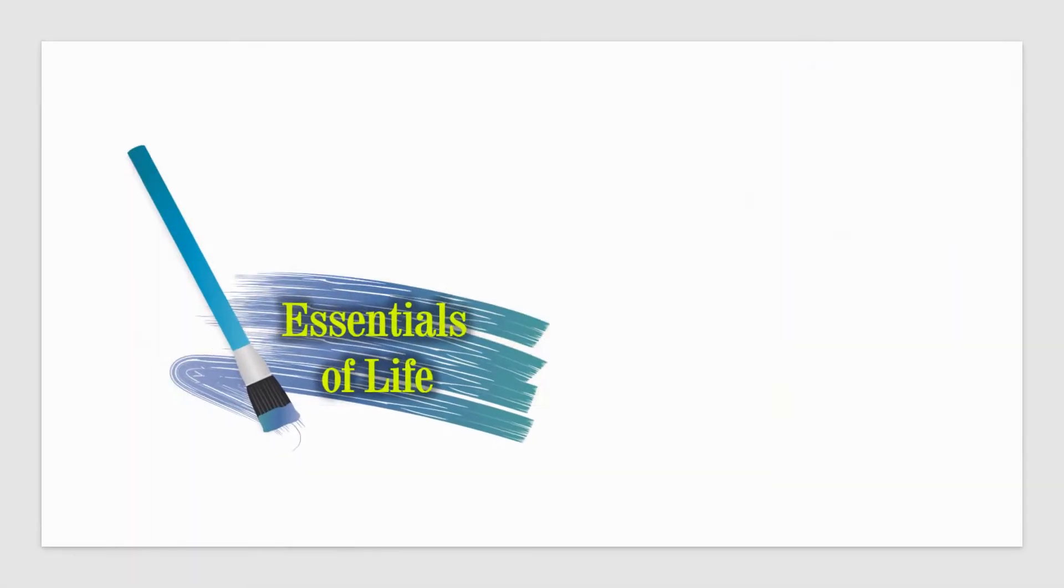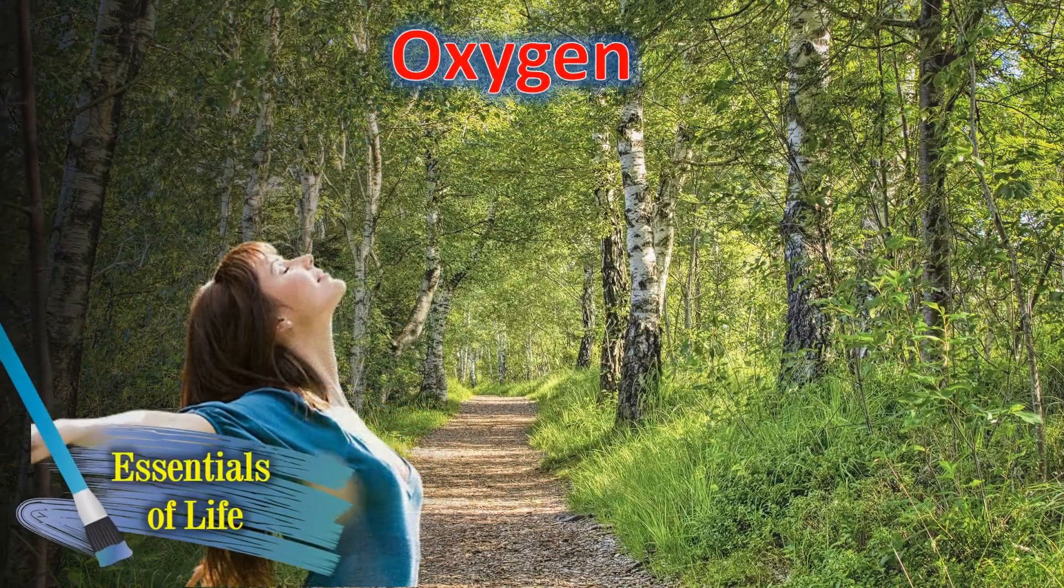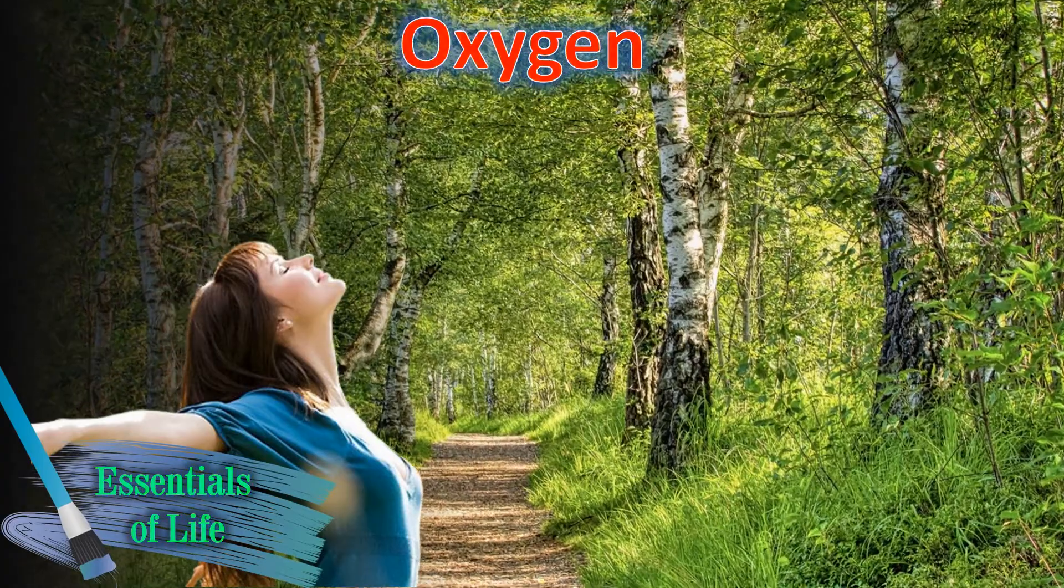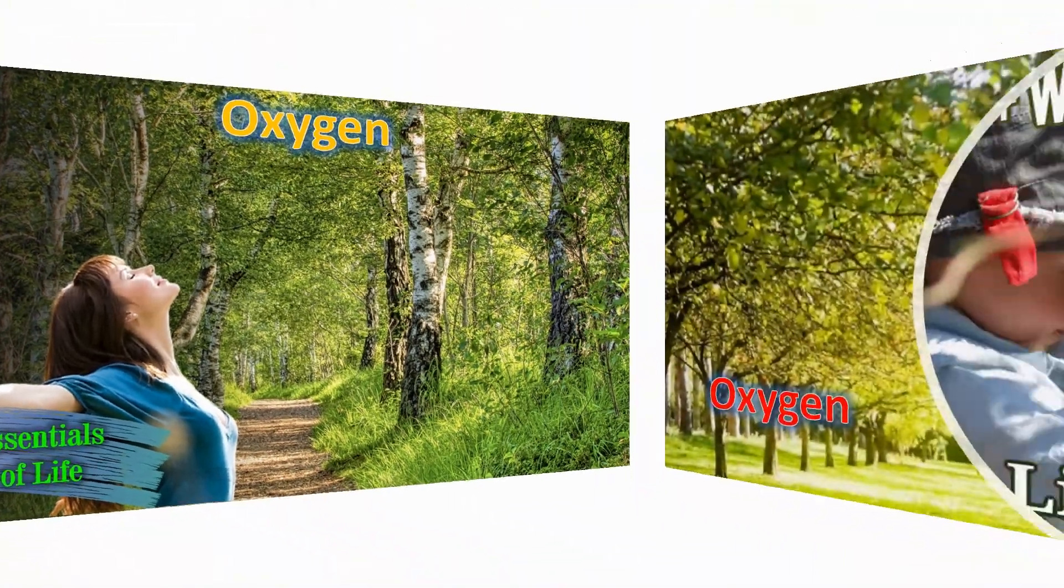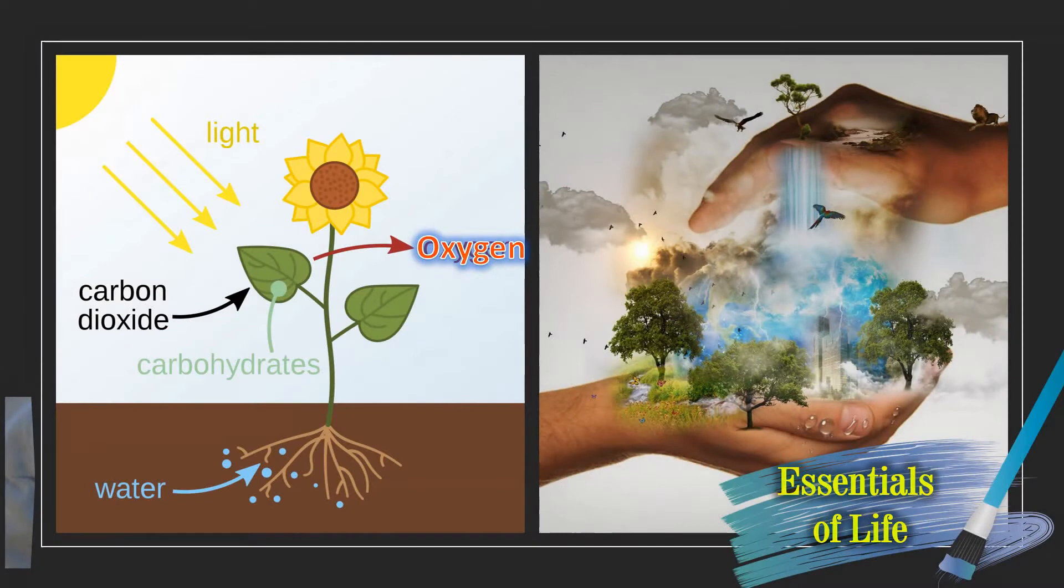A suitable environment with good oxygen content in the atmosphere is the next essential condition for life to exist. Each and every living being on Earth needs oxygen to breathe, so a good content of oxygen in the air is essential for life. The primary and sustainable source of oxygen on planet Earth are plants, which are the factories for oxygen that manufacture oxygen during the process of photosynthesis.